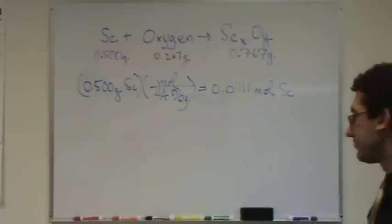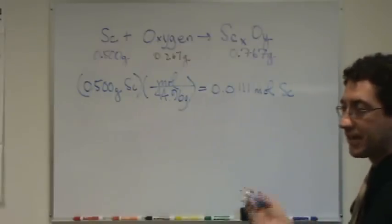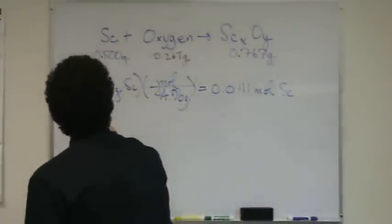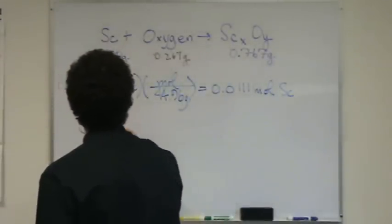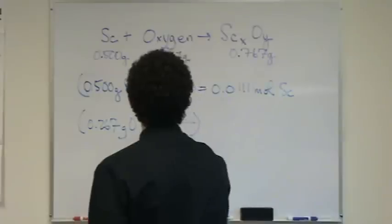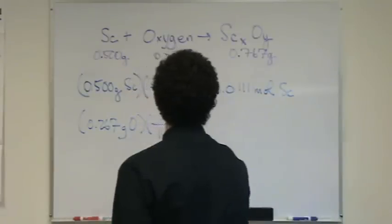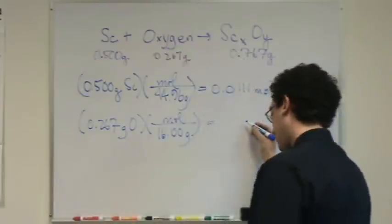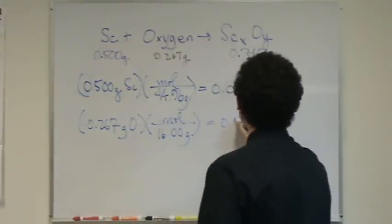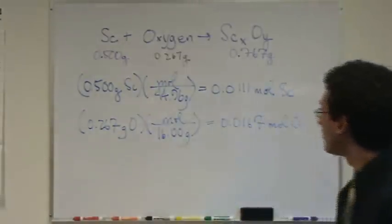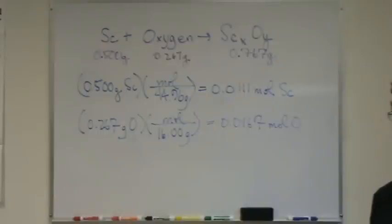So, there we go. Just moles. I'm going to do the exact same thing for oxygen, again, just for the atom. So, for oxygen, it's 0.267 grams of oxygen, and the molar mass is 16.00 grams per mole. And that will equal 0.0167 moles of oxygen. Okay? So, now, moles of oxygen, moles of scandium.